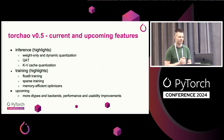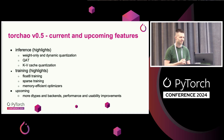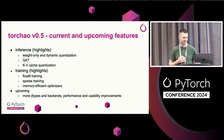Here is a sample of some features available today in v0.5. For inference, we have weight-only dynamic quantization across various dtypes, QAT, and KV cache quantization. For training, you can train in float8, and recently you can also train in int8. You can train with sparsity, and we have memory-efficient optimizers. Finally, this library is developed in heavy collaboration with the community, specifically the Geotomo Discord group, so please come and build with us.